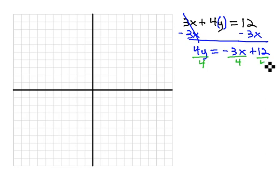And again, with division, we must divide each and every term by the 4. This gives us y equals negative 3 fourths x plus 3.